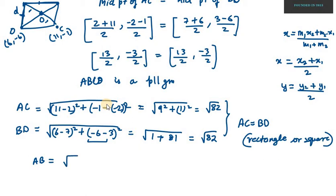Distance between AB will be square root of (7 minus 2) whole square plus (3 plus 2) whole square. 7 minus 2 is 5 square, 3 plus 2 is 5 square. So you get 25 plus 25 which is square root of 50.